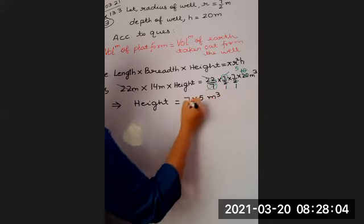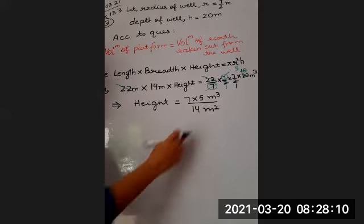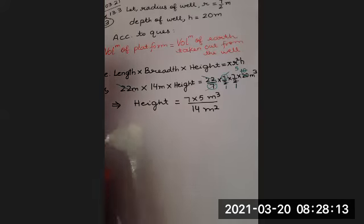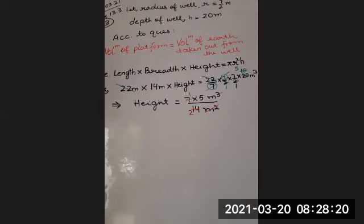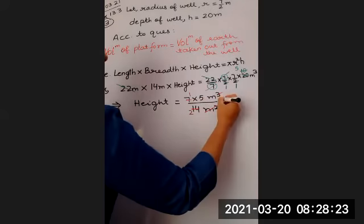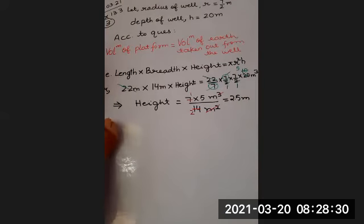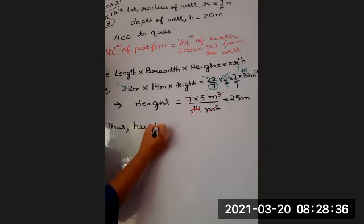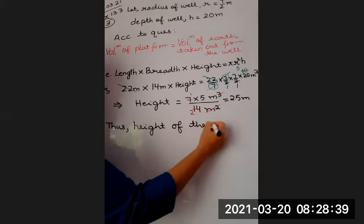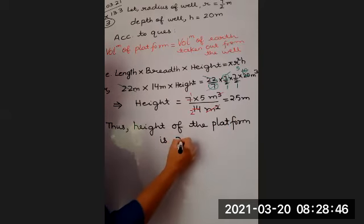Ma'am, 30. Here I have 14 meter square. Now meter square and this become - we can get 2.5. We are not going to leave it like this but we are going to put the final statement as well. Thus, height of the platform is 2.5. Thank you.